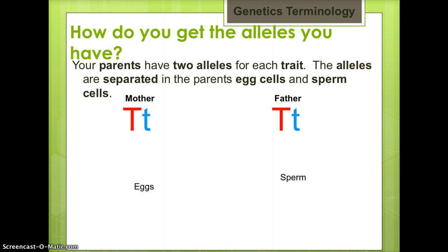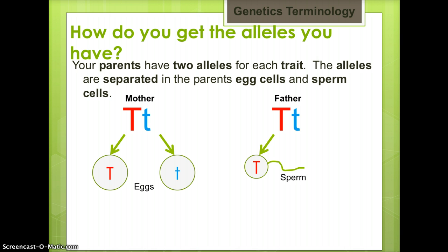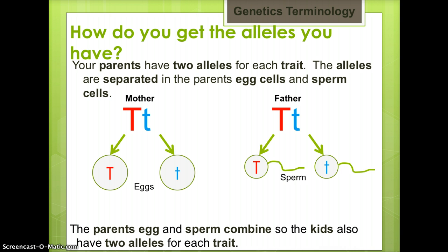How do you get the alleles you have? Your parents have two alleles for each trait. The alleles are separated in the parent's egg cells and sperm cells. In this example, both of the parents are heterozygous for a trait. Half of the mother's egg cells will have the dominant allele, here represented by a capital T, and half will have a recessive allele, here represented by a lowercase t. Half of the father's sperm cells will have a dominant allele, here represented with a capital T. The parent's egg and sperm combine, so the kids also have two alleles for each trait.